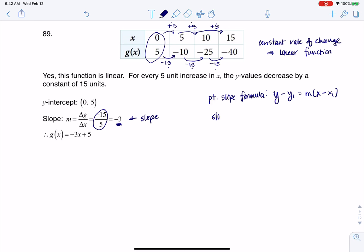So slope-intercept would be y equals mx plus b. So from here, I can directly say, this would be y equals negative 3x, and then the y-coordinate of my y-intercept is 5, and I get there.